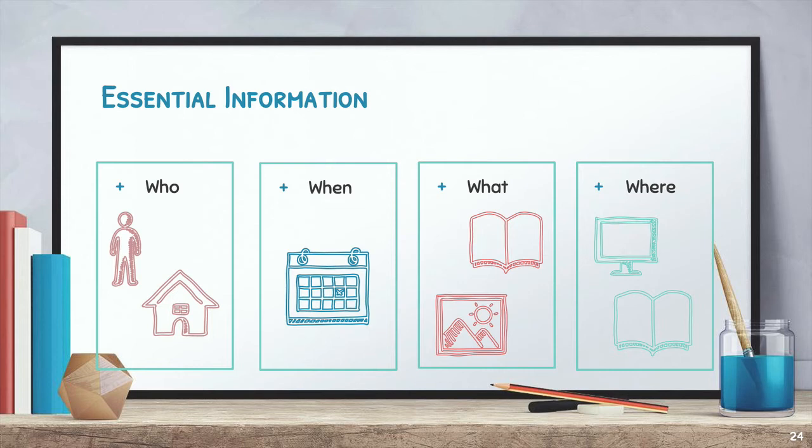When was it published? What is it — what's the title of the article, website post, video, or photograph that you're trying to cite? Where can the reader find this source? This doesn't mean which library the reader can find the source in. Rather, it means if this was a chapter from a book, what book is it from? If it's an article from a journal, what journal is it?